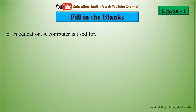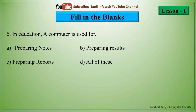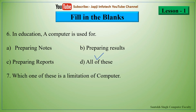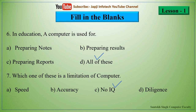The sixth one is: in education, a computer is used for blank. The options are preparing notes, preparing results, preparing reports, or all of these. The right answer is all of these — preparing notes, results, and reports. The seventh one is: which one of these is a limitation of computer? The options are speed, accuracy, no IQ, or diligence. The right answer is no IQ is a limitation of computer.